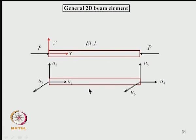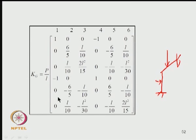For a general 2D beam element carrying an axial load, with two nodes and three degrees of freedom per node (U1, U4 axial; U2, U3, U5, U6 flexural), the geometric stiffness matrix can be derived following this procedure. This element is useful for members subjected to combined axial deformation and bending, such as in frame analysis. The remaining steps — coordinate transformation, assembly — are similar to what we have already done.